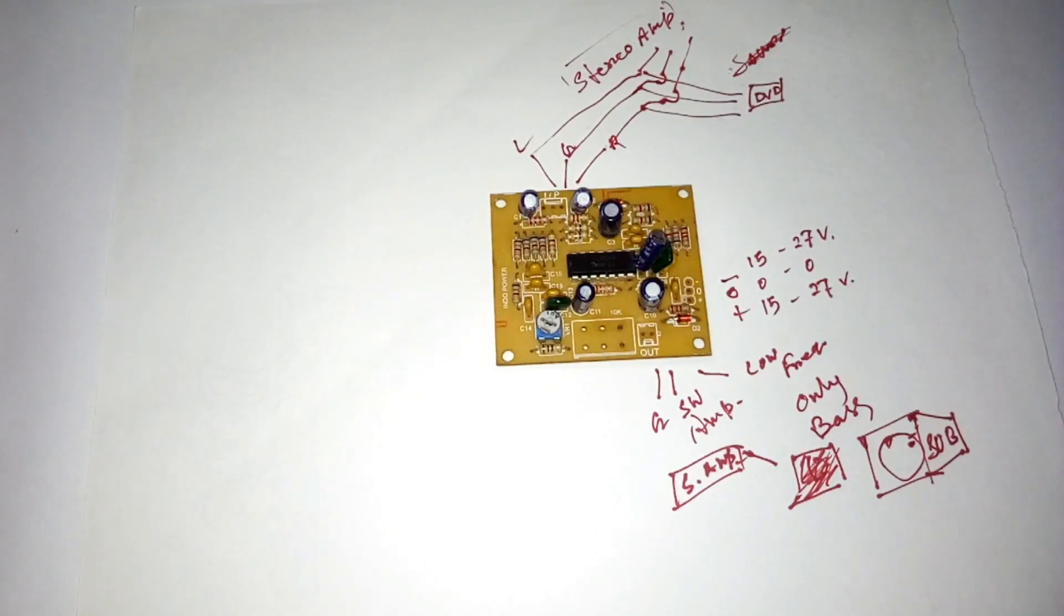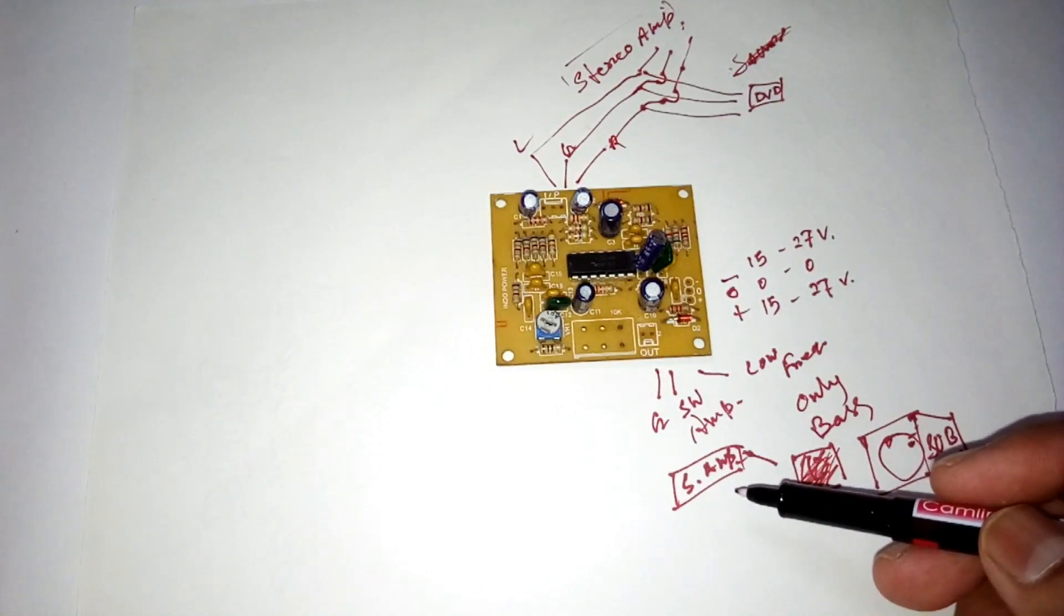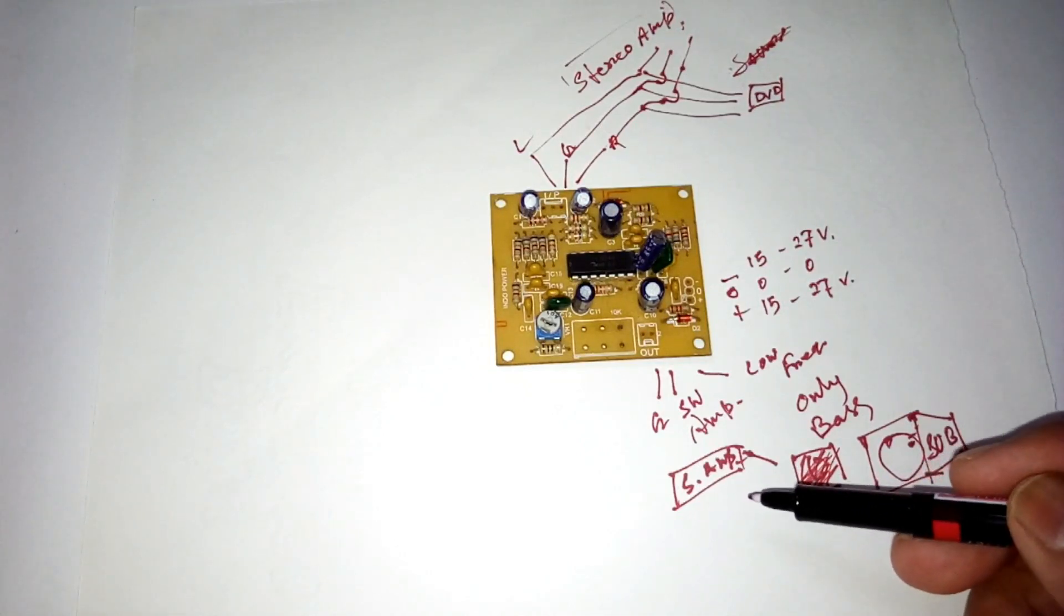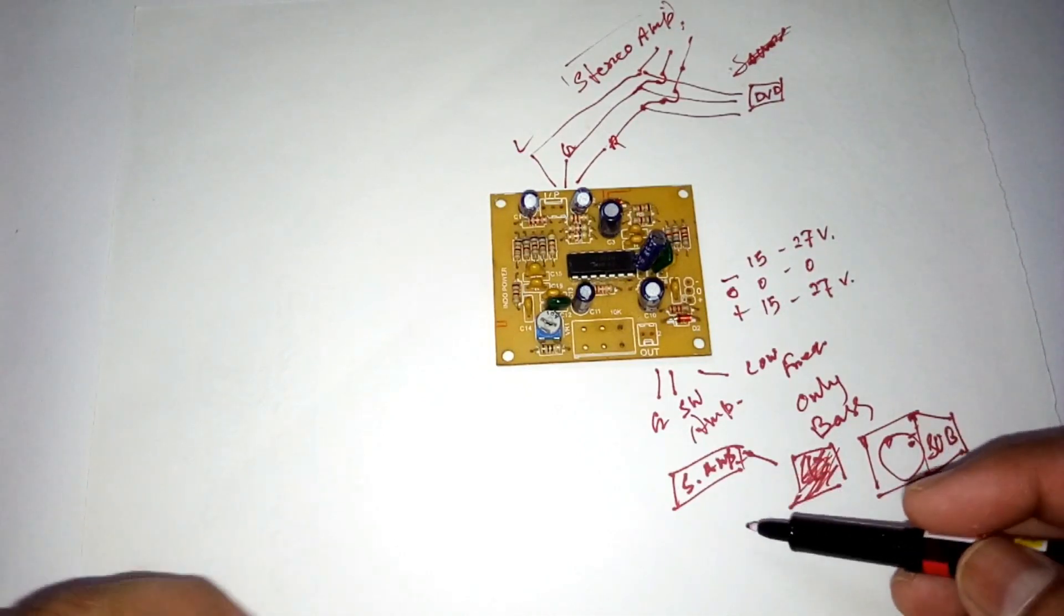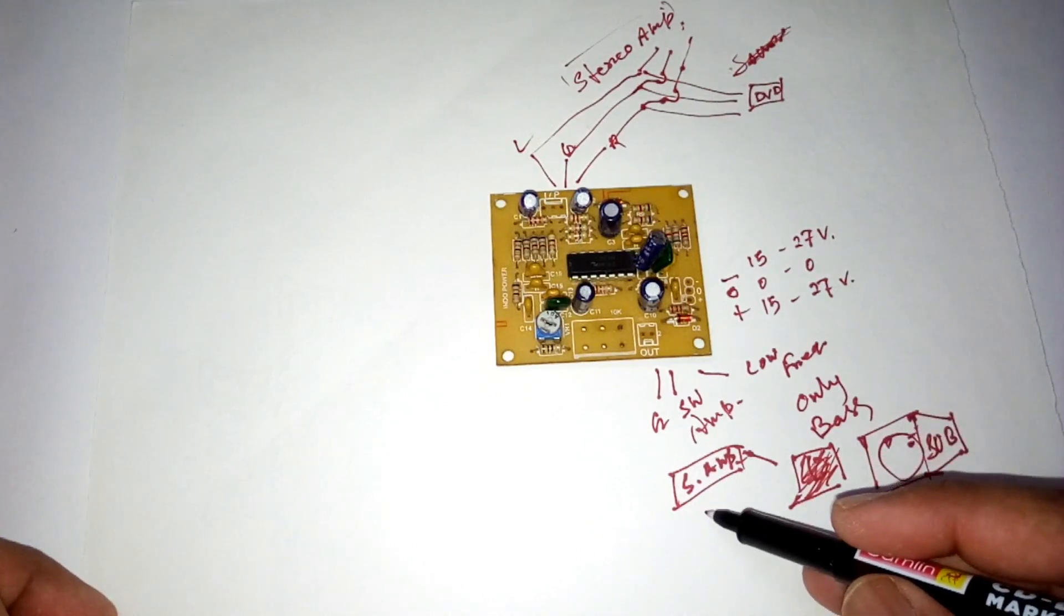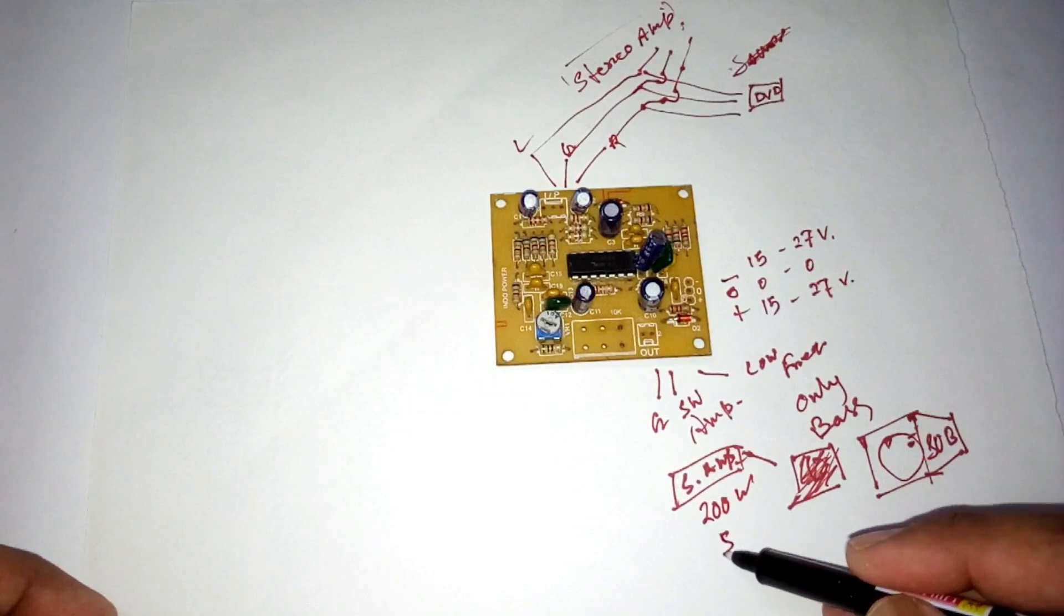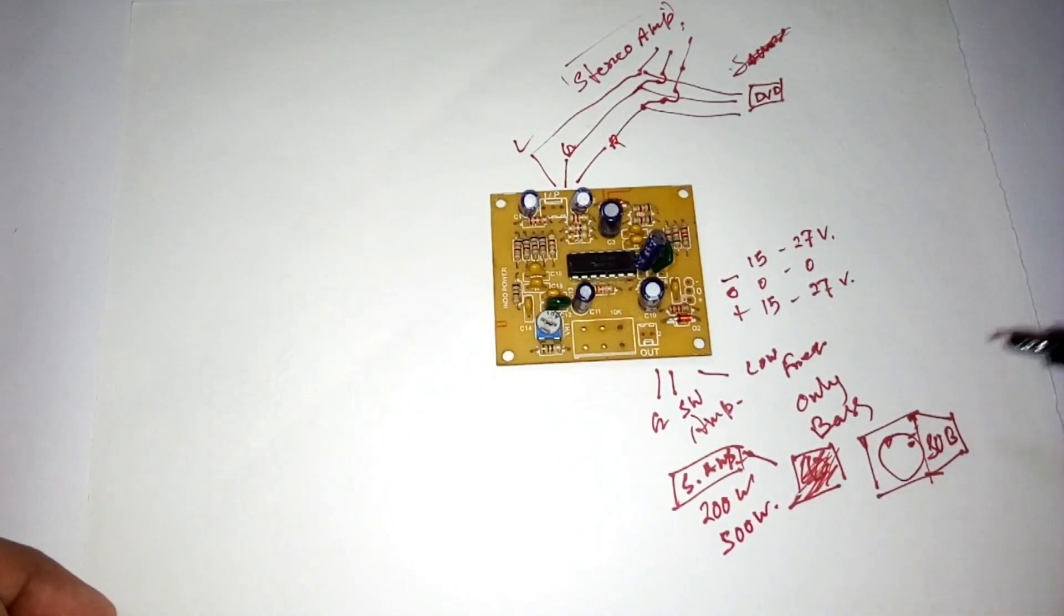Now it depends on you. You can use any type of amp. If you use MOSFET amp, you'll get powerful bass and you'll get more wattage. You can use 200 or 500 watt, whatever you like. And you can use 10 inch, 12 inch, 15 inch, whatever you like. That is your choice.